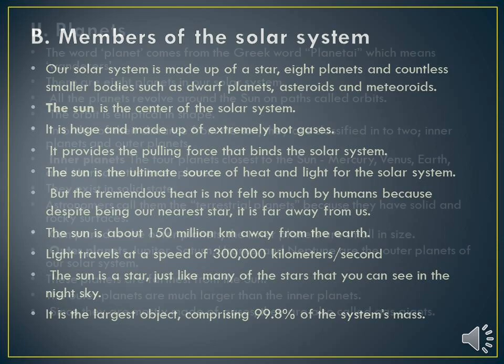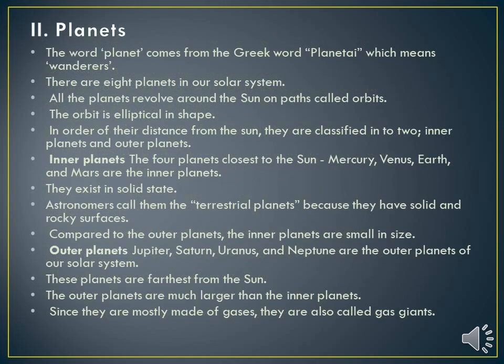The second member of the solar system is planets. The word planet comes from the Greek word 'planetia,' which means 'wander' or 'revolve.' There are eight planets in our solar system, and all eight planets revolve around the sun on their paths called orbits. The orbit is elliptical in shape.